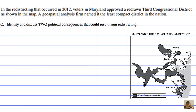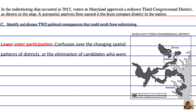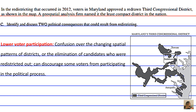A political consequence of redistricting is lowered voter participation. Confusion over the changing spatial patterns of districts, or the elimination of candidates who were redistricted out, can discourage some voters from participating in the political process.